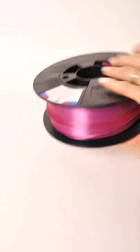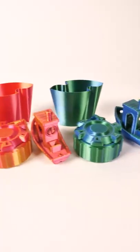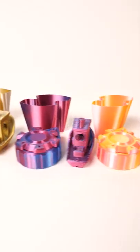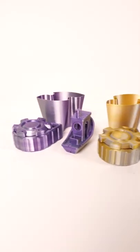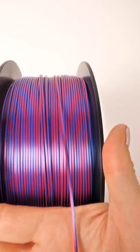This is 3D Jake's Magic PLA and there are six different filaments with two colors in each filament. It's perfectly divided down the middle so when you print with it you get two different colors.